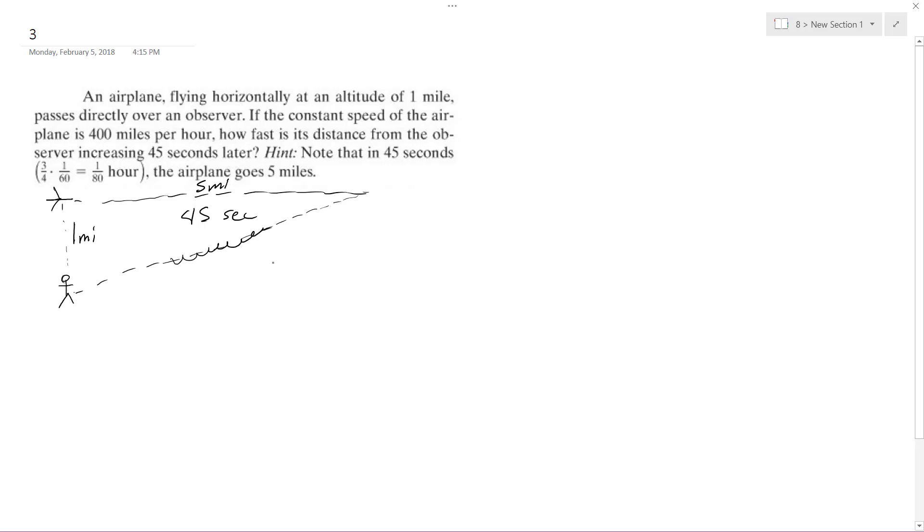Looking this over, it's kind of like an implicit differentiation we've got here, so this is our one squared and we'll use this as our plus x squared, which will be the 45 seconds later, the five miles, and then we'll have this is equal to y squared.